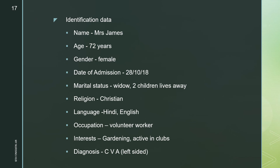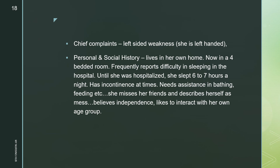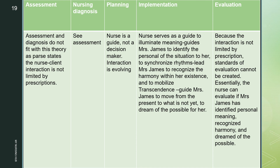Now let's see the application of nursing theory in nursing practice using a case study. The patient is a female, date of admission 28-10-18, marital status widow, two children, lives away, religion Christian, language English, occupation volunteer worker, interests gardening, active in clubs. Diagnosis: CVA, left-sided. Chief complaints: left-sided weakness; she is left-handed. Personal and social history: lives in her own home, now in a four-bedded room, frequently reports difficulty sleeping in the hospital — until hospitalized she slept six to seven hours a night — has incontinence at times, and needs assistance in bathing, feeding, etc. She misses her friends, describes herself as independent, and likes to interact with her own age group.